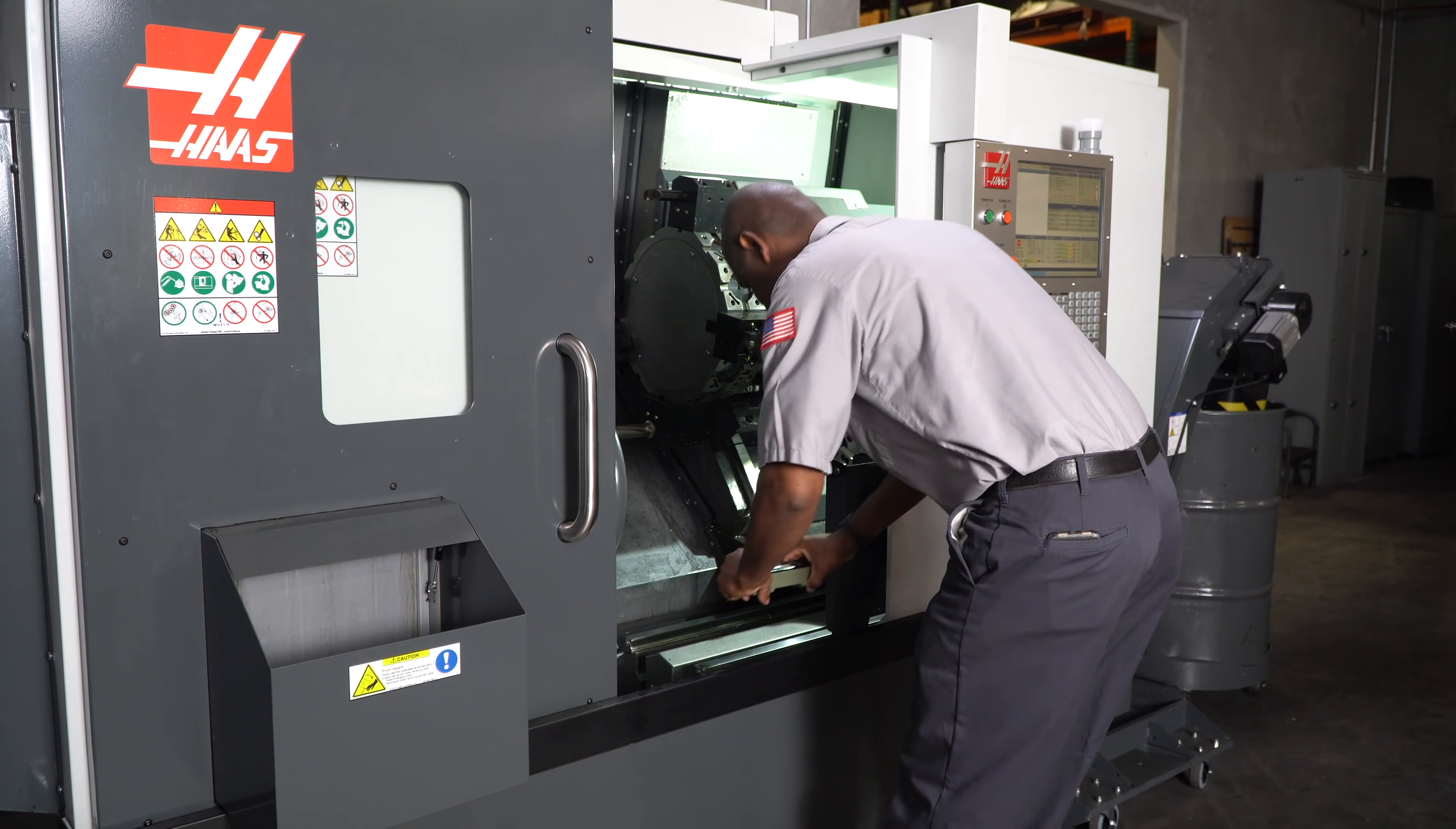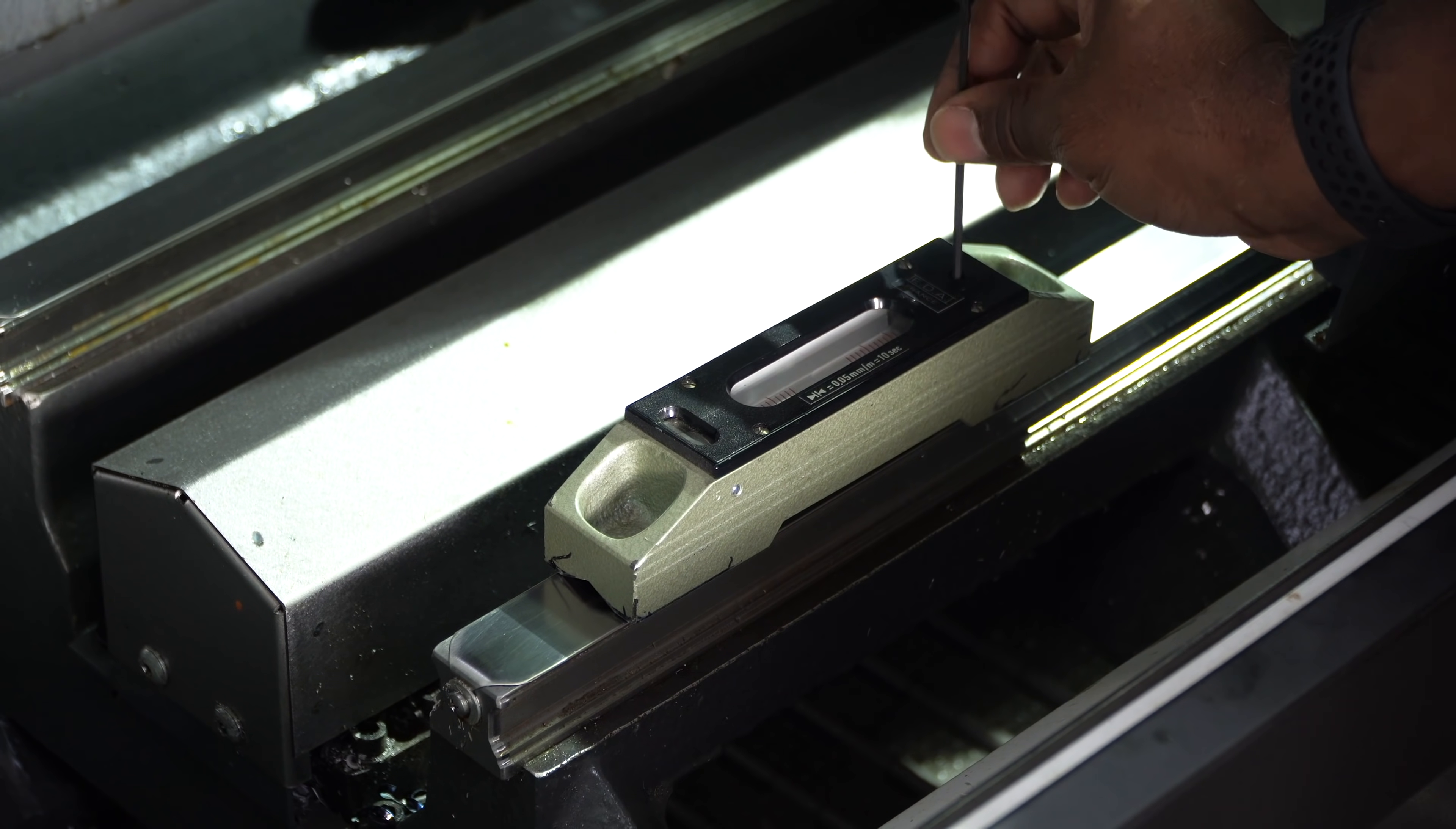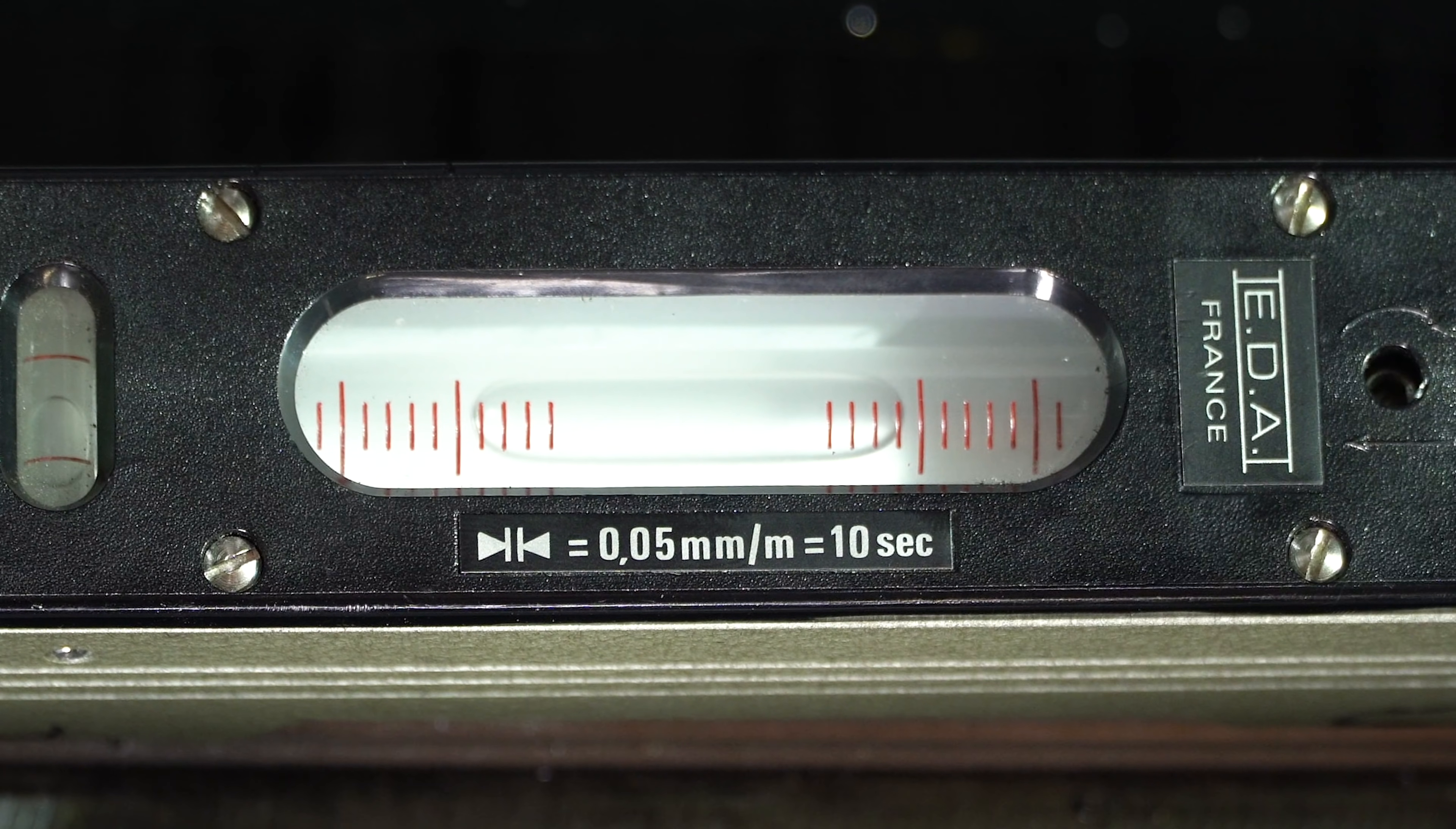Put the level on a flat surface like a tailstock or a granite table. Pay close attention to the bubble. If the bubble is off, use the adjuster to correct the bubble. Some levels use a knob and some use a set screw and an Allen key to adjust the bubble.